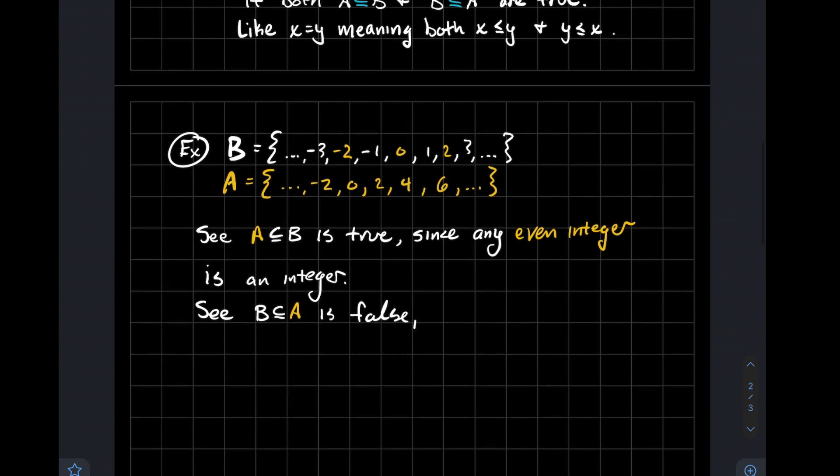On the other hand, B as a subset of A is false, since not all integers are even. So you see the integers that I left white, those are not even integers. And so there exist things that are in B that are not in A. Therefore, B is not contained in A.